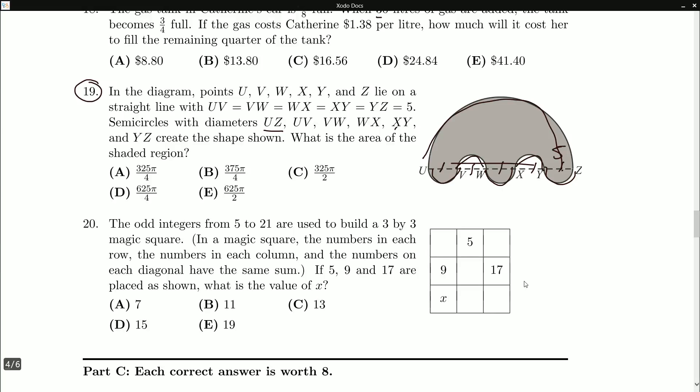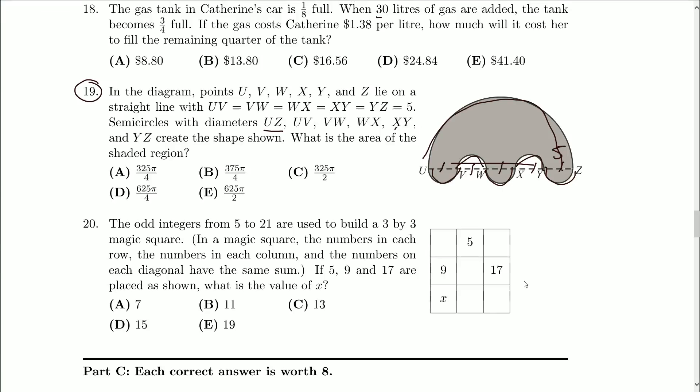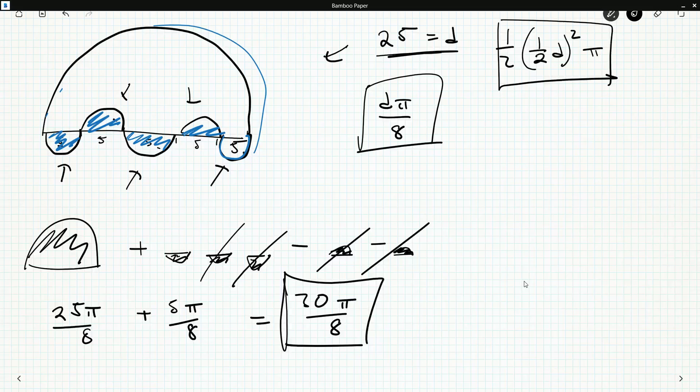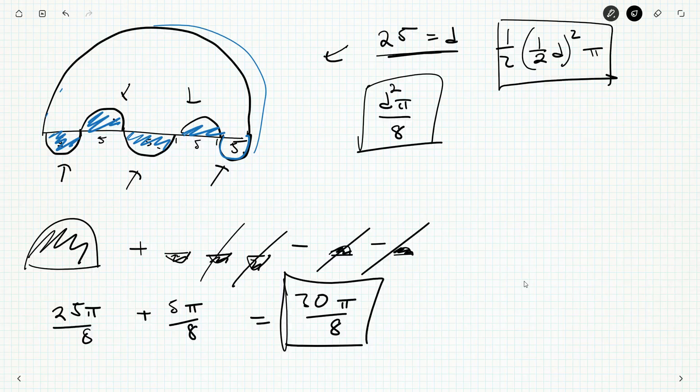So 30π by eight, and whoa, whoa, whoa, what am I doing? Each of these is five. Oh, I didn't square it. D squared. I was wondering why my numbers were so much smaller than their numbers.